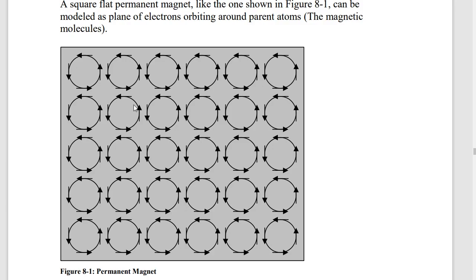A magnetized material has all these loops spinning in the same direction. In a real magnetic material it's not all of them — if every loop were in the same direction, you would have a magnetic field so strong it would disintegrate matter. So in reality it's maybe every 10th or every 100th molecule. We're showing it this way because it's easy to demonstrate.